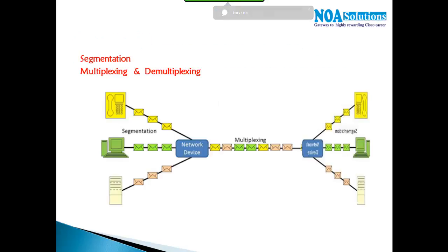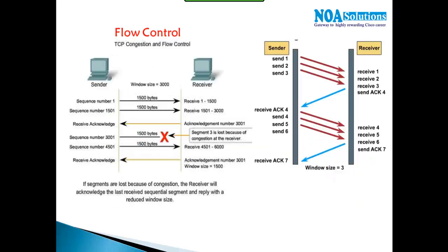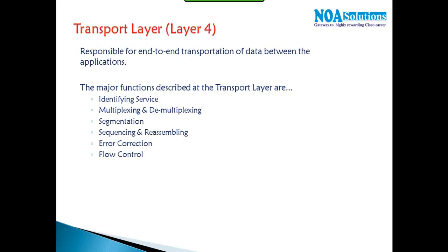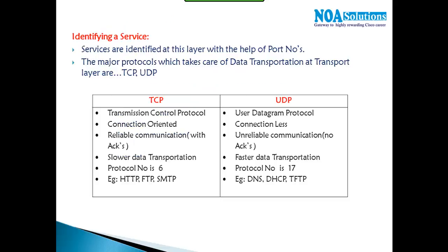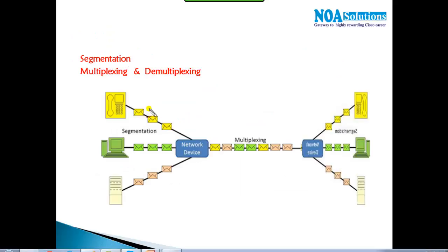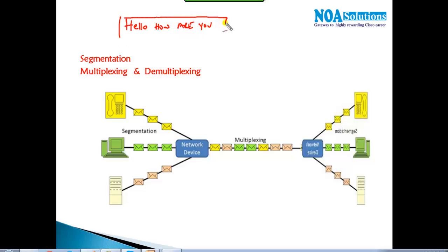Next is segmentation and reassembling. Segmentation is the process of dividing one single message into multiple segments. For example, a message like 'hello, how are you' will be divided into multiple small pieces, which we call segments. This entire process is called segmentation.